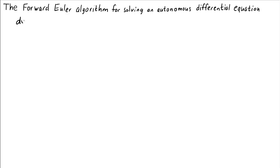If we have an autonomous differential equation, let's say of the form dy/dt equals f(y), with initial conditions y(0) equals some number, we'll call it y naught.